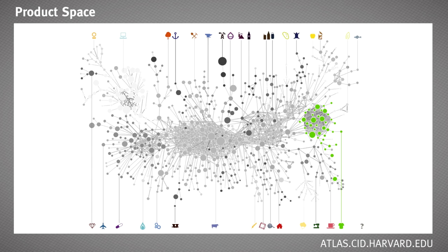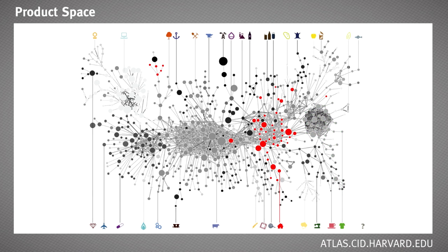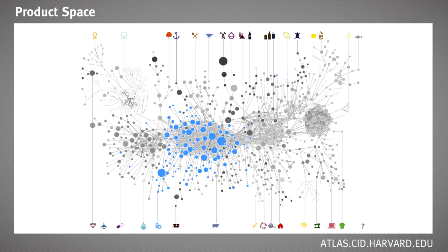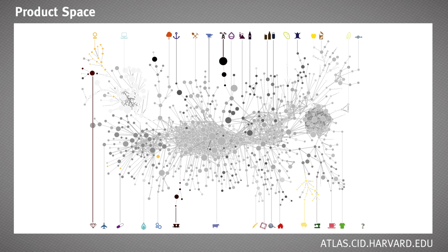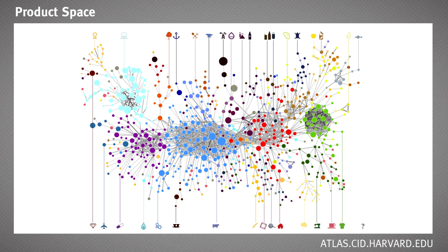It is a very heterogeneous forest. It has some very dense parts where you have garments and shoes, construction materials, machinery like cars and trucks, chemicals, and electronics. These are dense patches of the forest. They're surrounded by other parts of the forest which are much less dense, where products are much farther away from one another. That's the product space.